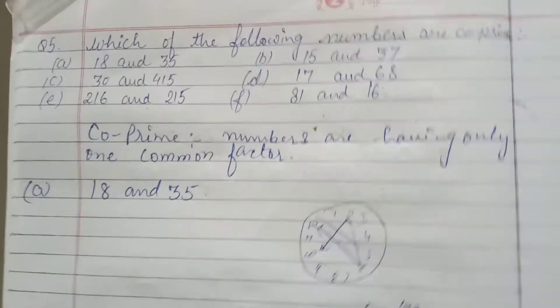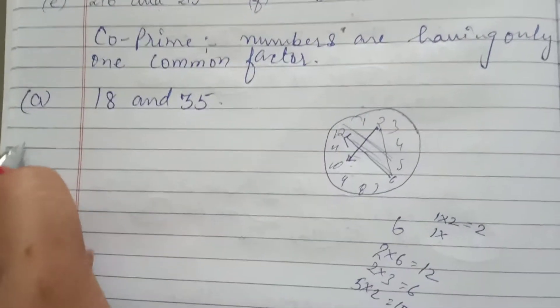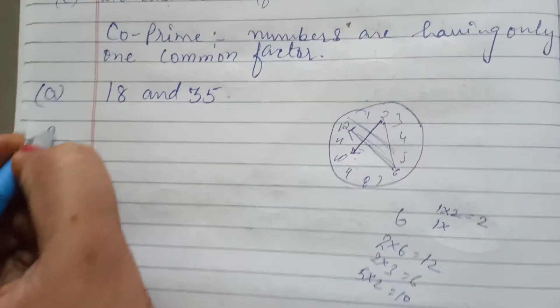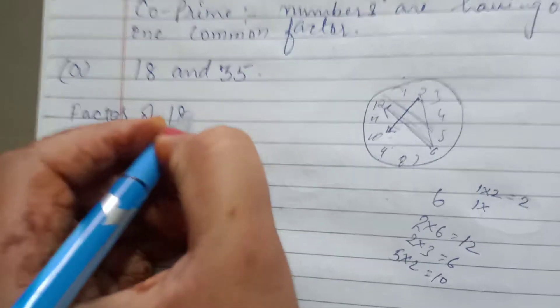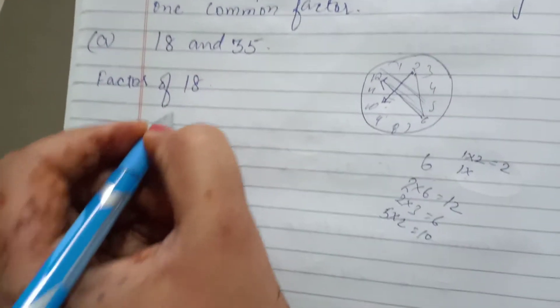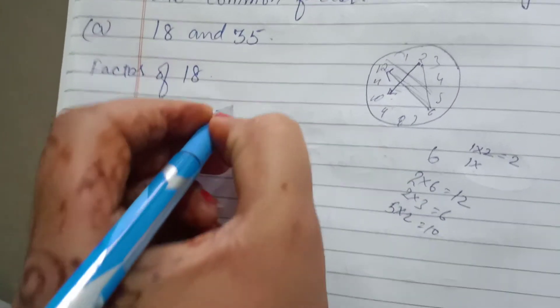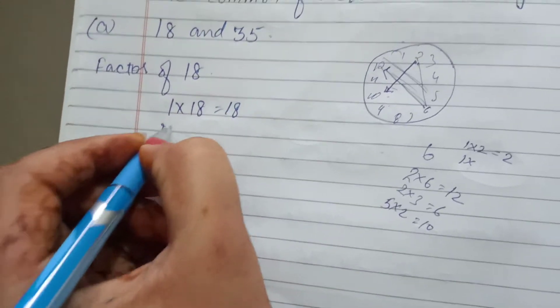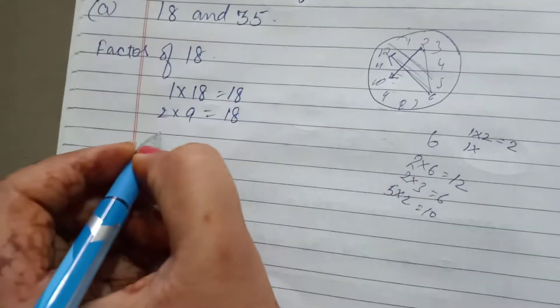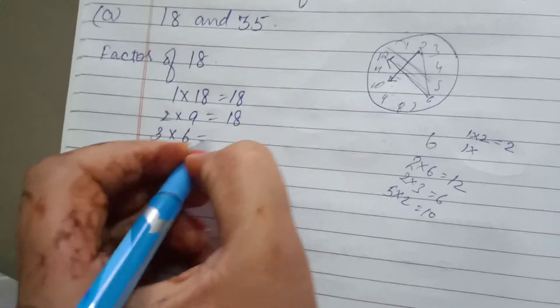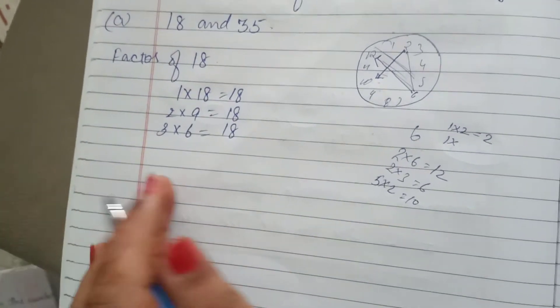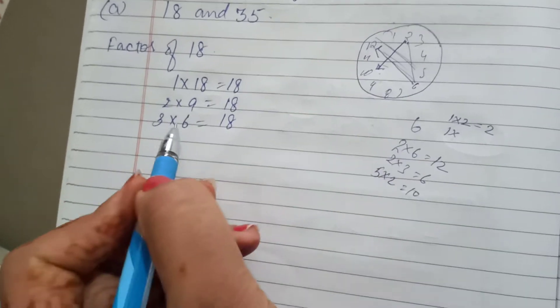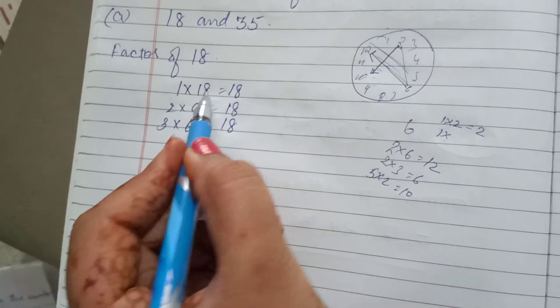First, you write the factor of 18. Factor of 18. 18 ones are 18. Then, 2 nines are 18. Then, 3 sixes are 18. Then, in 4 table, not any other table come 18. Then, 6 table - 9 and 18, repeated numbers.